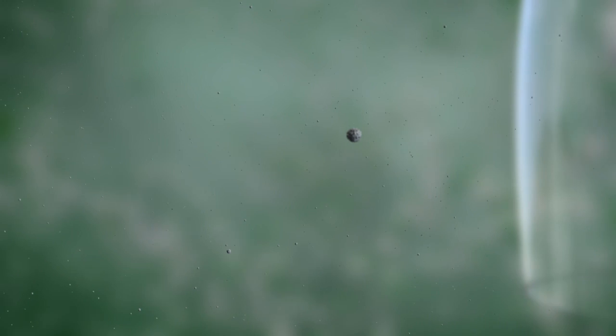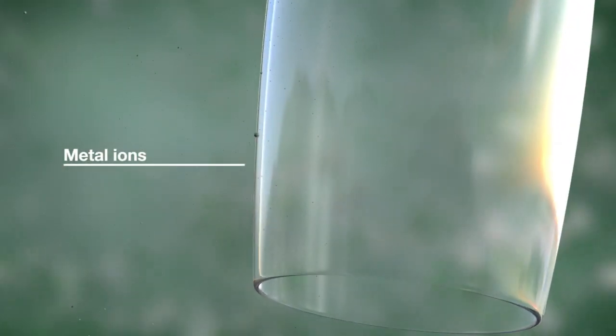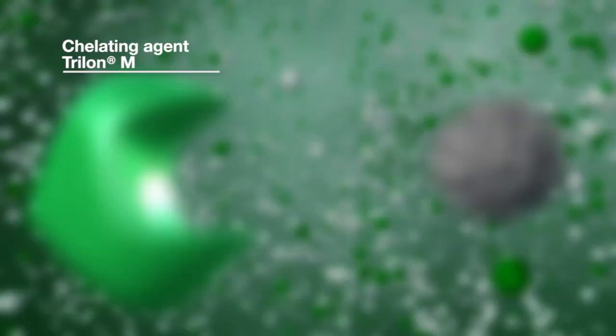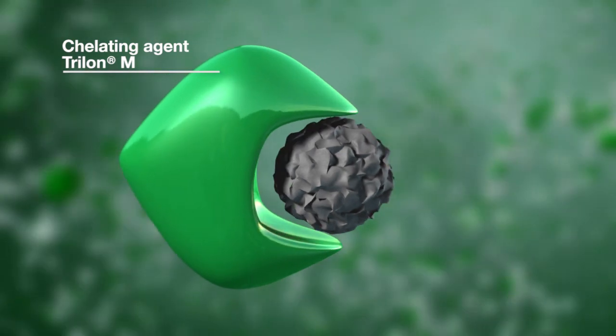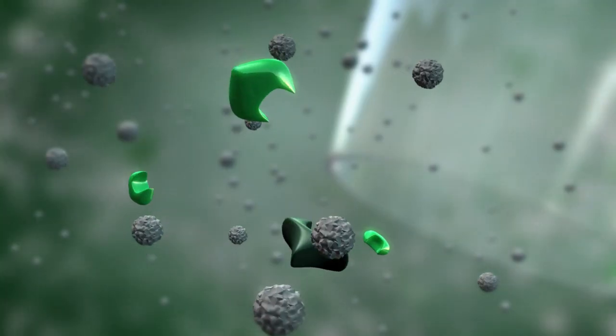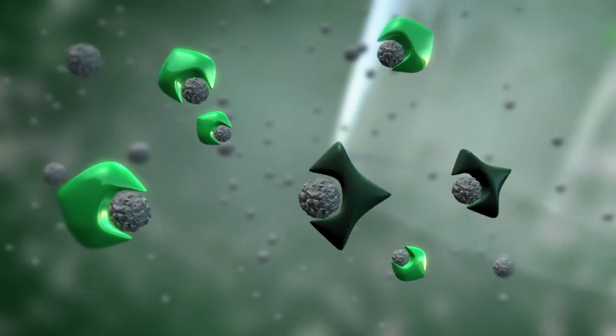The wash water contains metal ions that leave scale deposits on glassware and dishes. The so-called chelating agents like Trilon-M trap these troublesome ions and literally hold them in a tight grip. The otherwise hardly soluble lime scale then becomes water soluble.